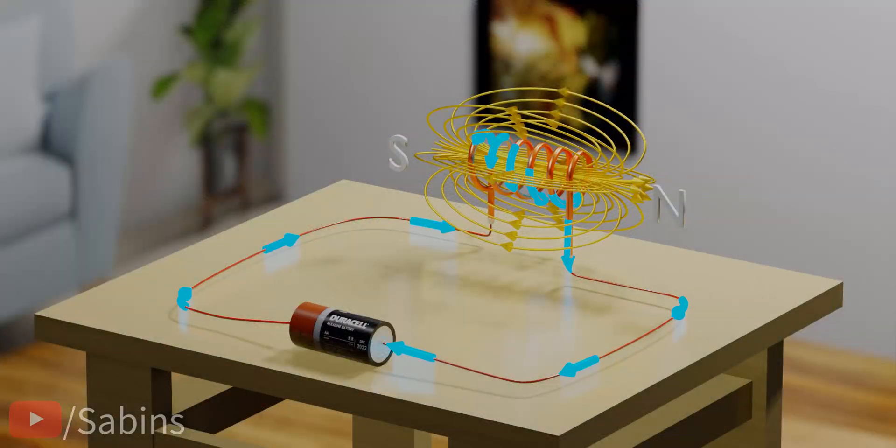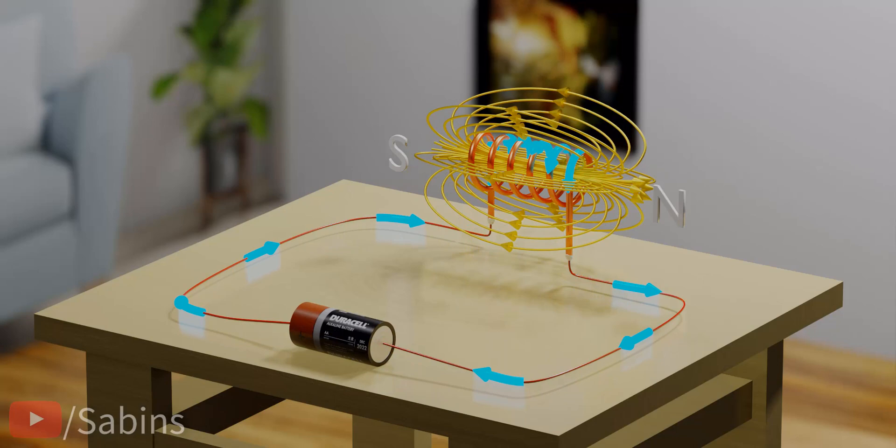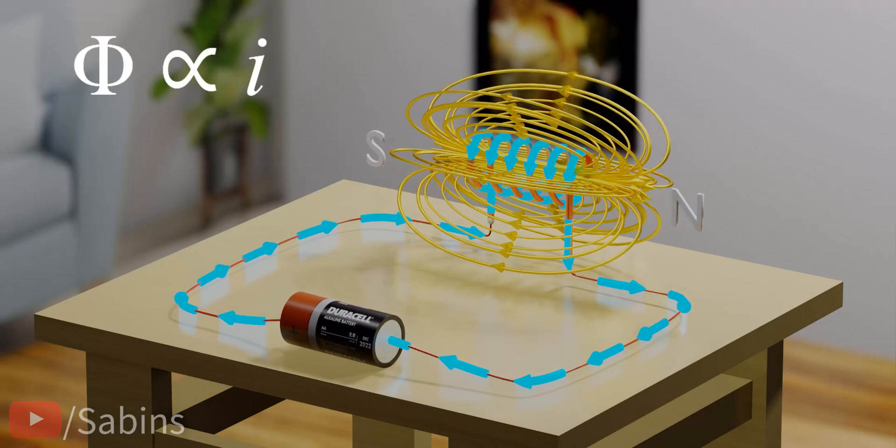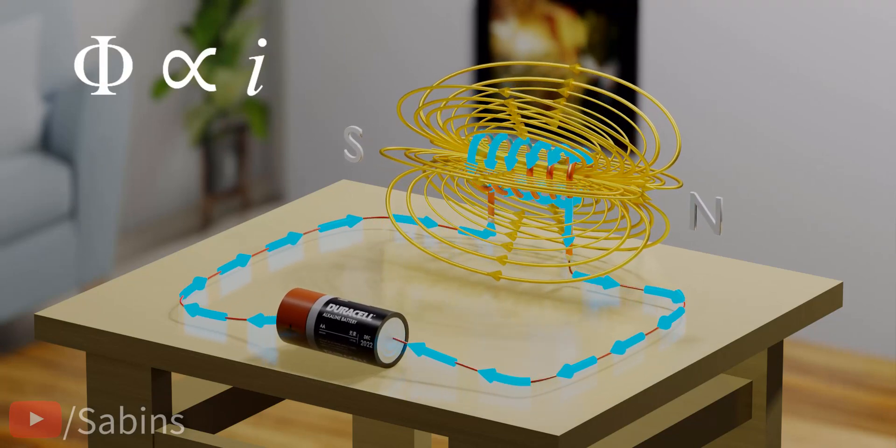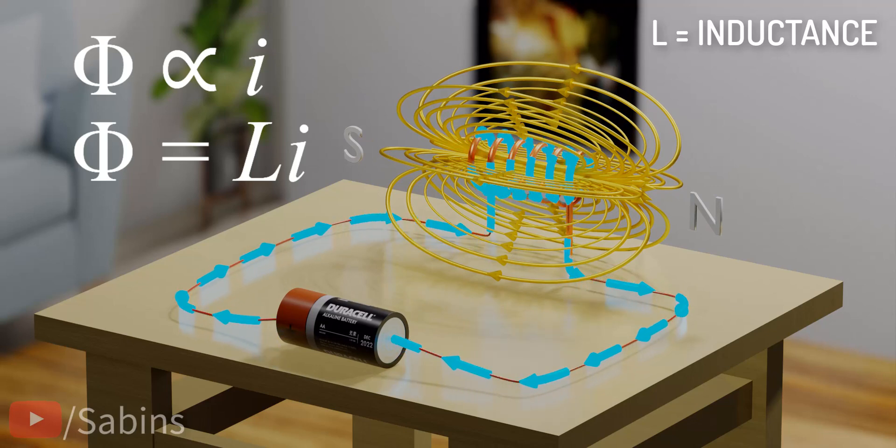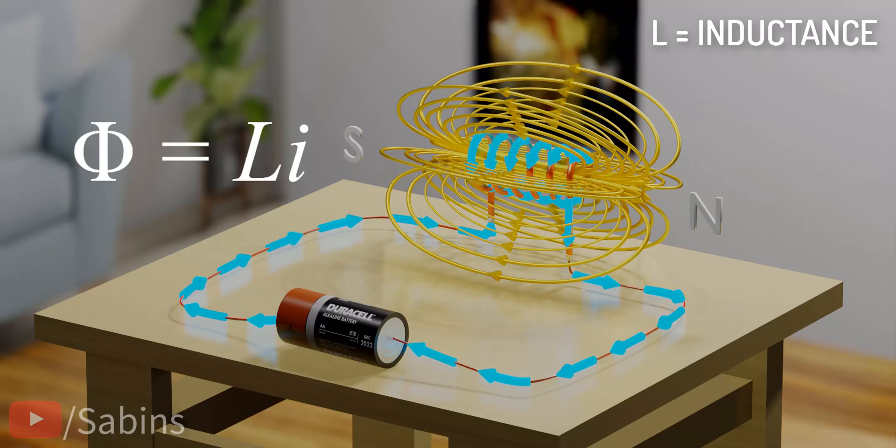We can also increase this magnetic flux by increasing the current through the coils. A constant called inductance connects between the magnetic flux and the current's value. The value of inductance depends purely on the geometry of the coil.